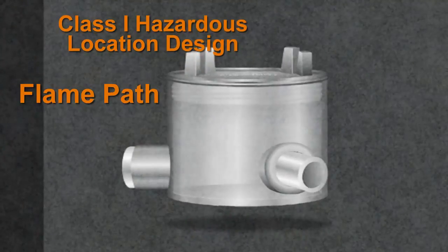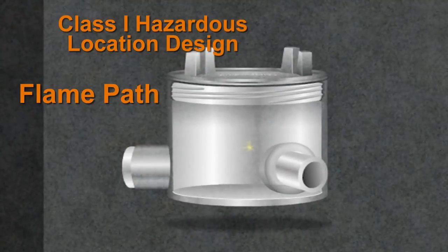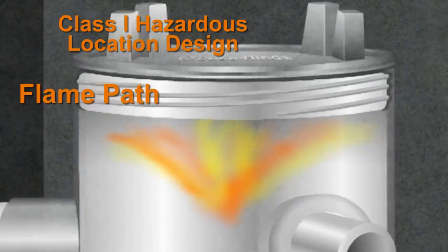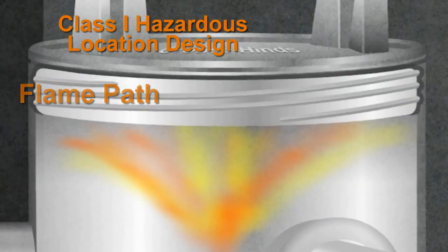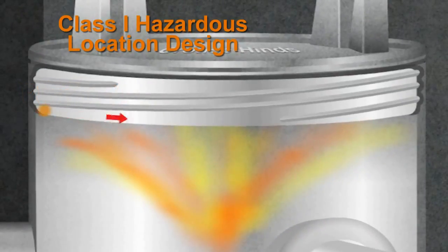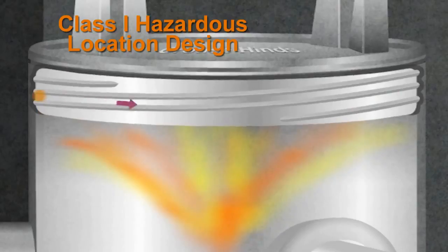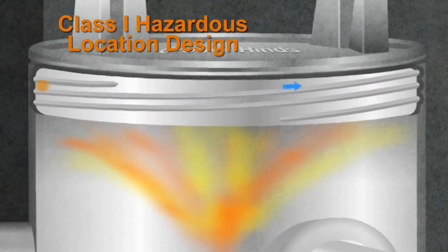Another example of the flame path is the threaded type. After an explosion, the gas travels out through the threaded joint, but as it does, the explosion cools off, allowing the flame to not ignite the hazardous atmosphere.